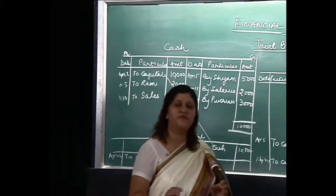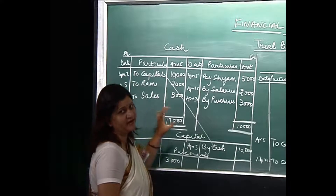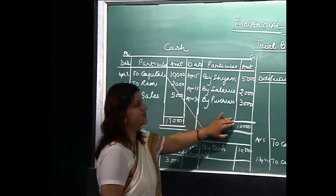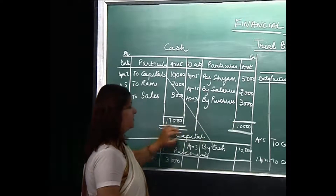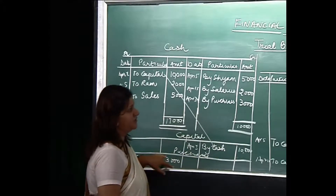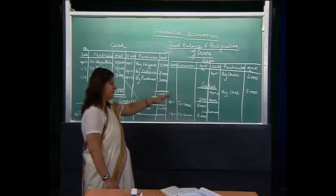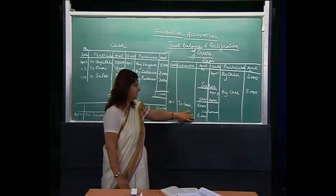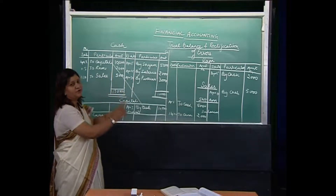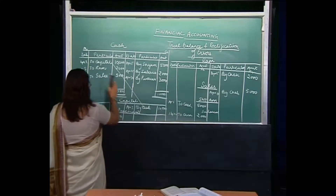There are two methods of preparing the trial balance. The first is the total method. Under that, we take up the totals of debits and credits. We will write cash account — under debit column 17,000 and credit column 10,000. For capital account, credit side 10,000. For purchases, debit side 3,000. RAM — credit side 2,000. Sales — credit side 5,000. SHAM's — debit side 5,000. Salaries — debit side 2,000. Wherever we see the totals, we directly put those accounts and do the posting. So we can have a look at these accounts over this trial balance.